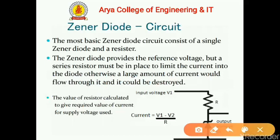The most basic Zener diode circuit consists of a single Zener diode and a resistor. The Zener diode provides the reference voltage, but a series resistor must be in place to limit the current into the diode; otherwise a large amount of current would flow through it and it could be destroyed. The value of the resistor can be calculated to give the required current for the supply used.